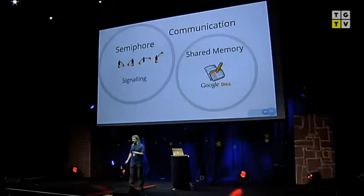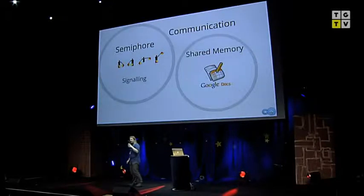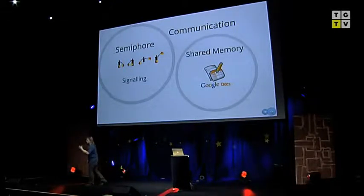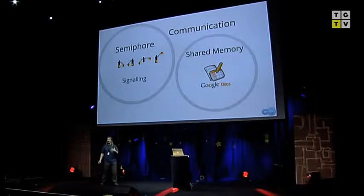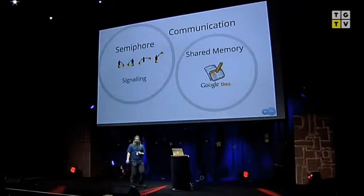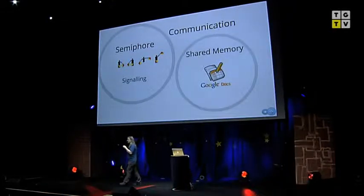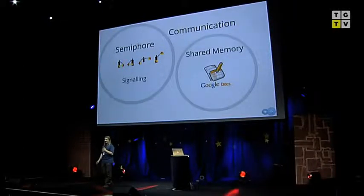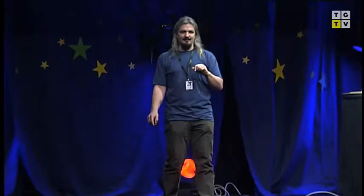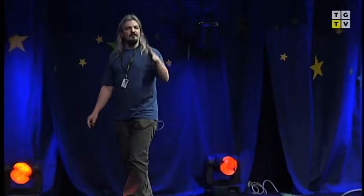One of the problems when you go to parallelism is that you need to communicate between the different units doing the processing. There are several kinds of communication. The two standard ones are semaphore-based and shared memory. Semaphores — can any of you read those semaphores? Have any of you learned naval semaphore code? It says 'game' across there — G-A-M-E. Semaphores were used to communicate at great distances between ships, and that's the metaphor we use for task parallel communication.